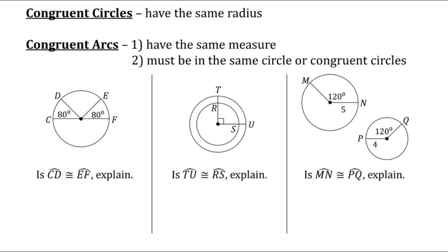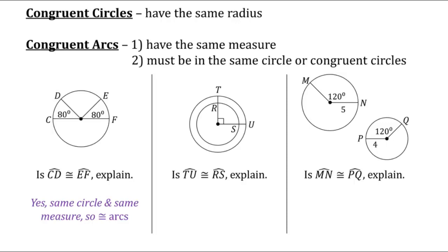Let's look at the first problem: is arc CD congruent to arc EF? They need two things. First, do they have the same measure? Both have a central angle of 80, so yes. Second, they're part of the same circle. Same circle and same measure — so these two arcs are congruent. For the second problem, both have a central angle of 90 degrees, so they have the same measure. But RS and TU are in different circles, so they are not congruent.